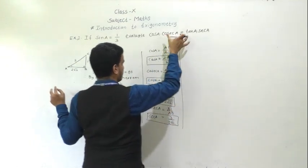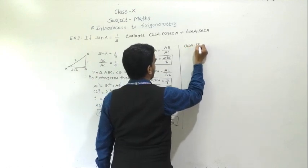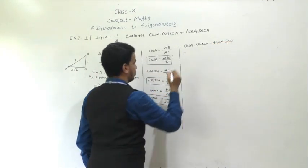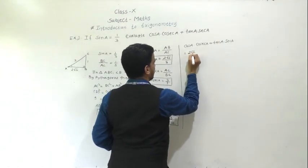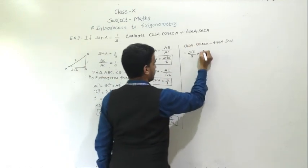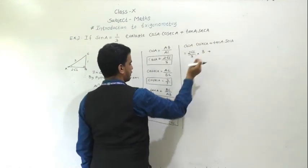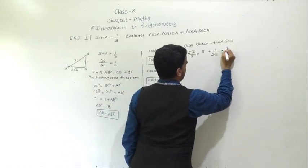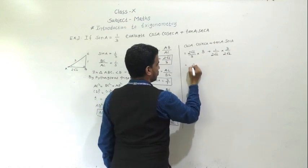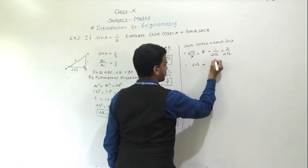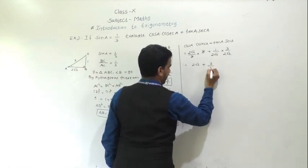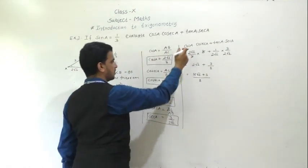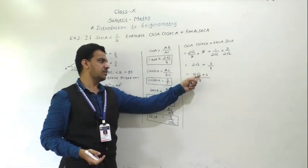Now evaluate cos A · cosec A + tan A · sec A. Substituting: (2√2/3) · 3 + (1/(2√2)) · (3/(2√2)). Simplifying: 2√2 + 3/8. Making the same denominator: (16√2 + 3) / 8. So the value is (16√2 + 3) / 8.